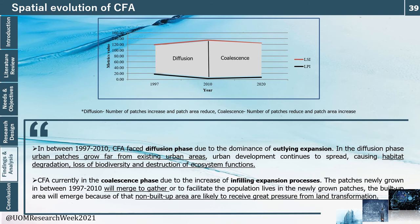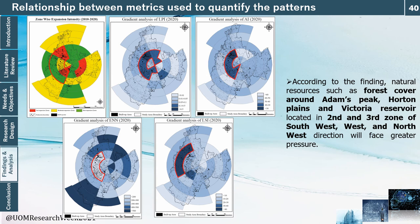Looking at the evolution of the Central Fragile Area, it has gone through both diffusion and coalescence phases. Currently, it is in the coalescence phase due to increasing infilling expansion. Patches grown between 1997 and 2010 will merge together, meaning non-built-up areas will face greater pressure from land transformation. Overall, analysis of magnitude and patterns indicates that natural resources such as forest cover around Adam's Peak, Horton Plains, and Victoria Reservoir — located in the second and third zones of the southwest, west, and northwest directions — will face greater pressure.